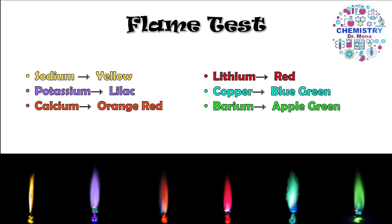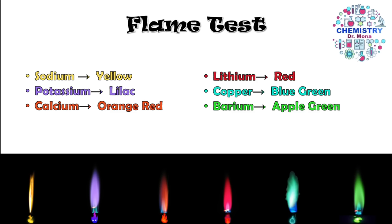Flame test colors: sodium gives yellow, potassium gives lilac, calcium gives orange-red, lithium gives red, copper gives blue-green, and barium gives apple green. A memory tip: stare at all the colors for one minute, then close your eyes — you should still be able to see all the colors. In the exam, close your eyes and recall them.